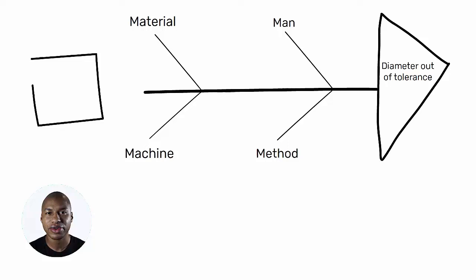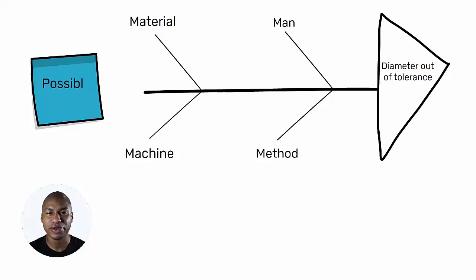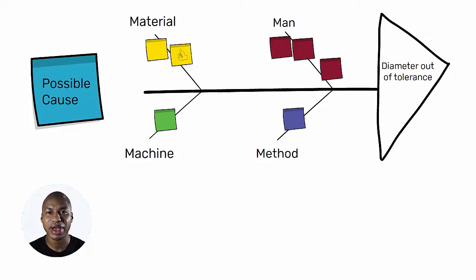The facilitator asks each member of the group to write down the possible causes of the problem on post-its. The post-its are subsequently collected by the facilitator, and with the help of the group are placed in the appropriate category. In case there are duplicate causes, they are considered as possibly more relevant as contributing to the problem.